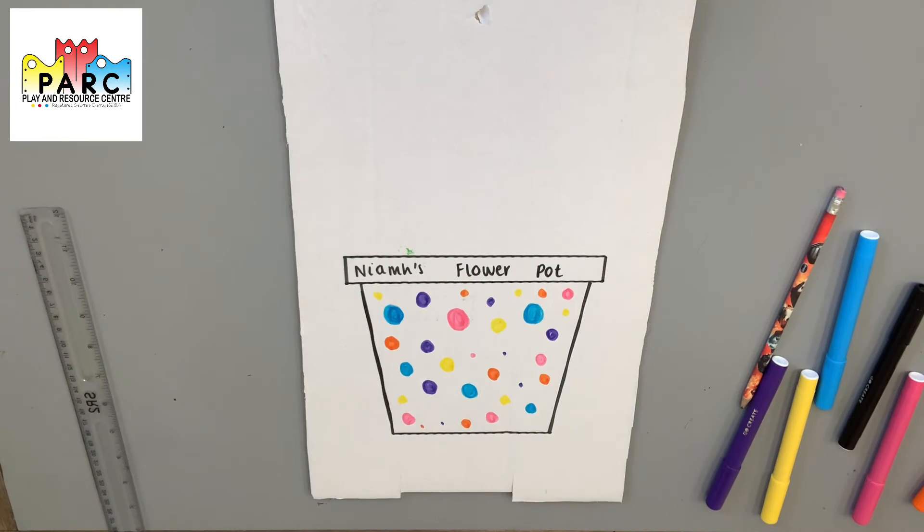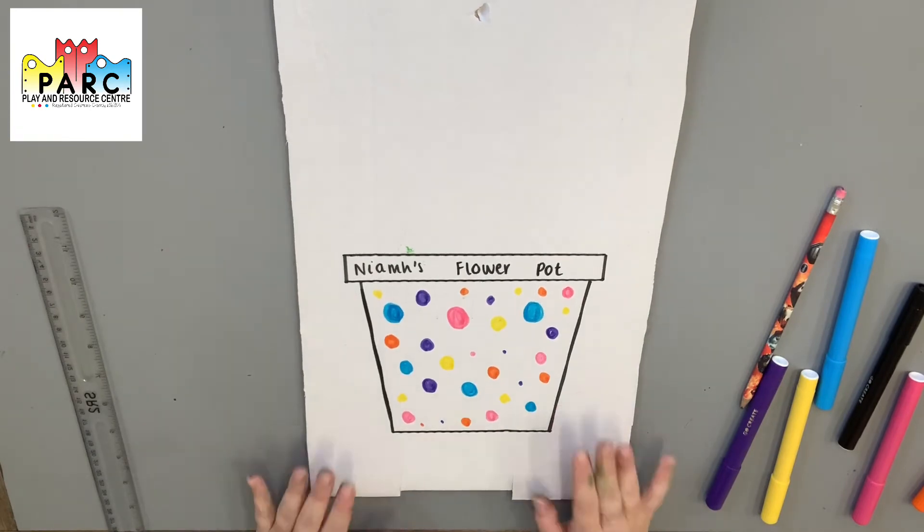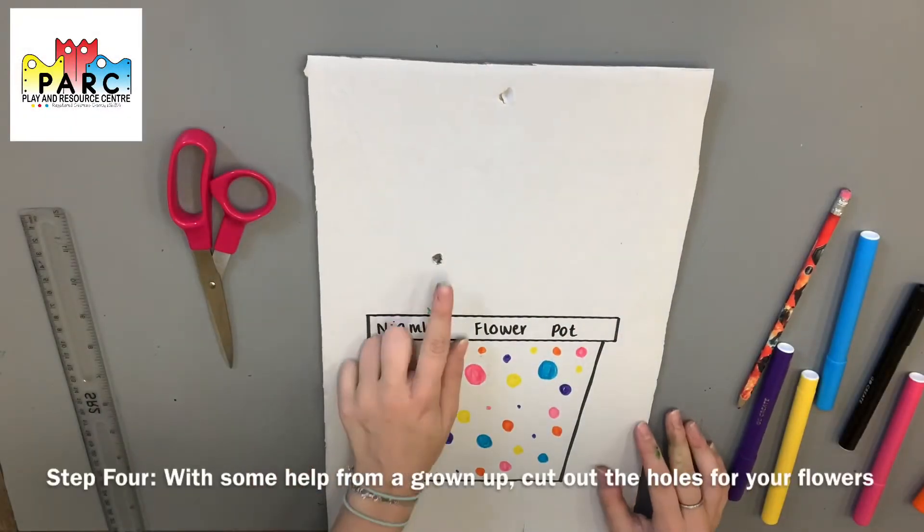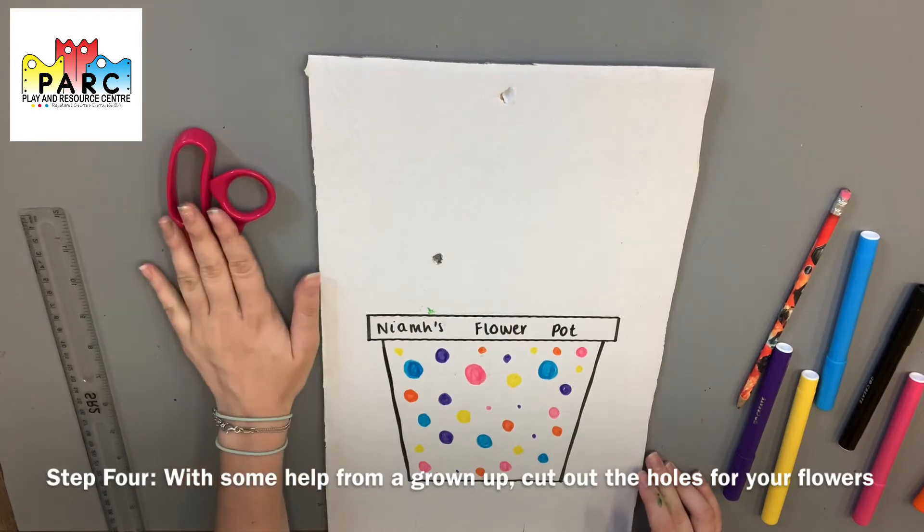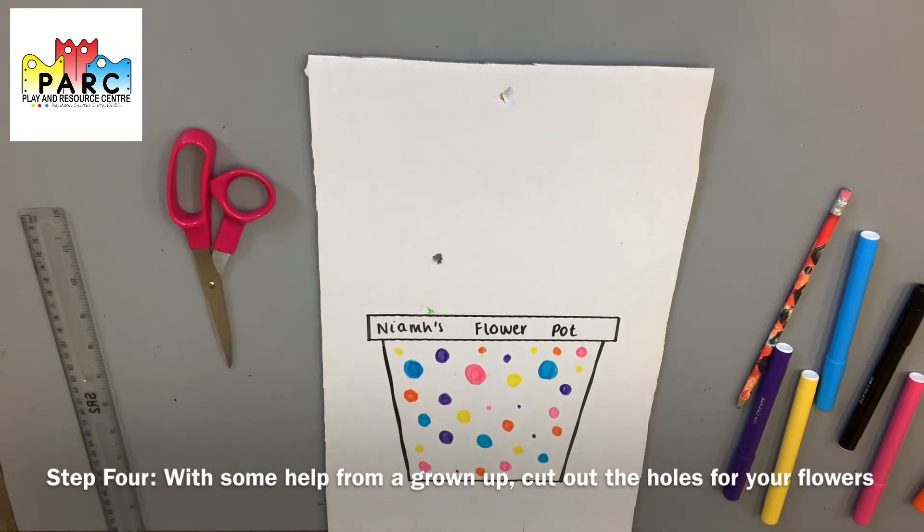So now that I have decorated my pot, it's time to put the flowers in it. At this point you are definitely going to need a grown-up because this part can be quite difficult and also quite dangerous. So you're going to need a grown-up to make some holes for all of the flowers. I'm going to quickly pop off screen and do that now with my scissors and your grown-ups can now do the same.